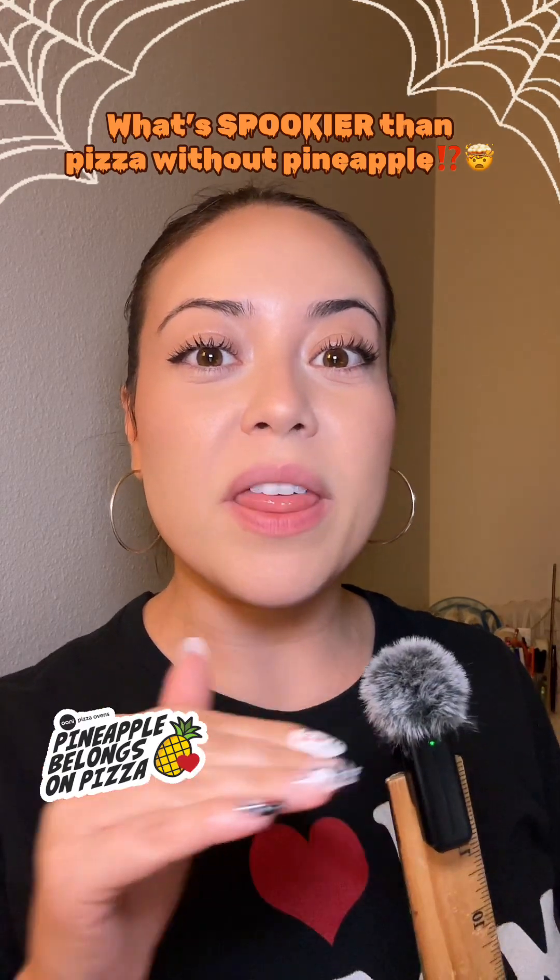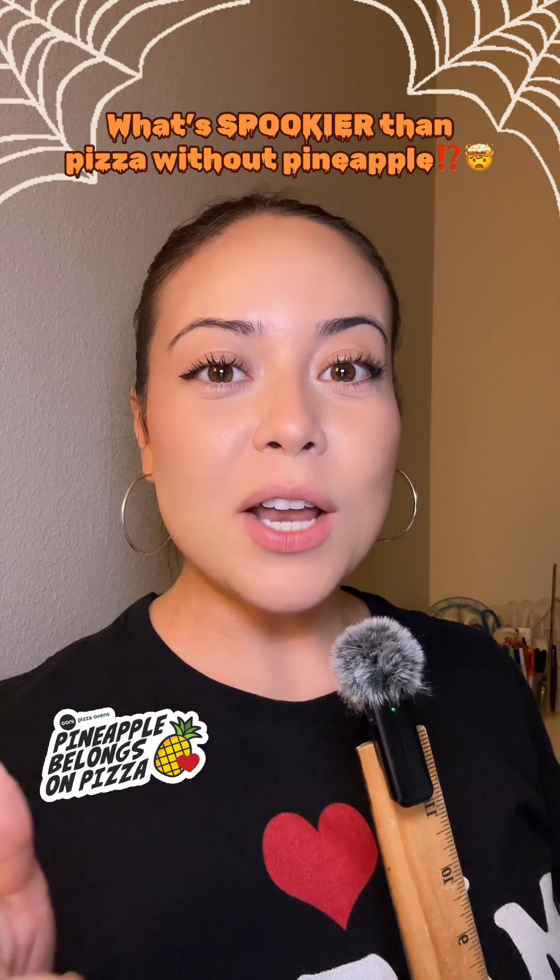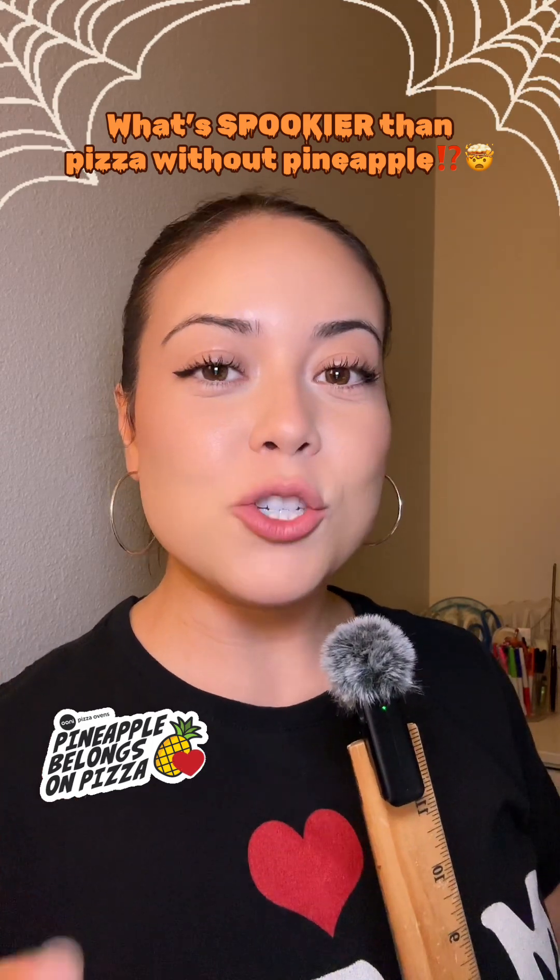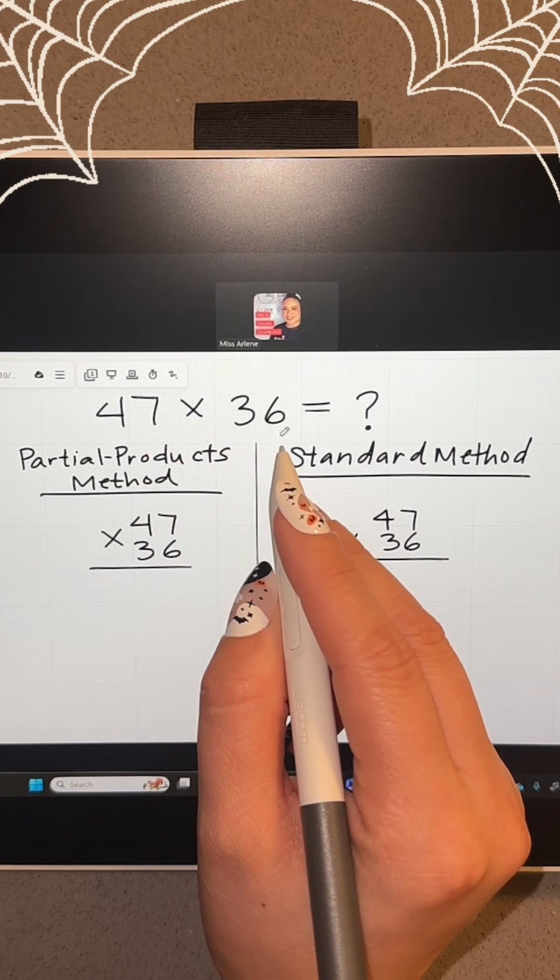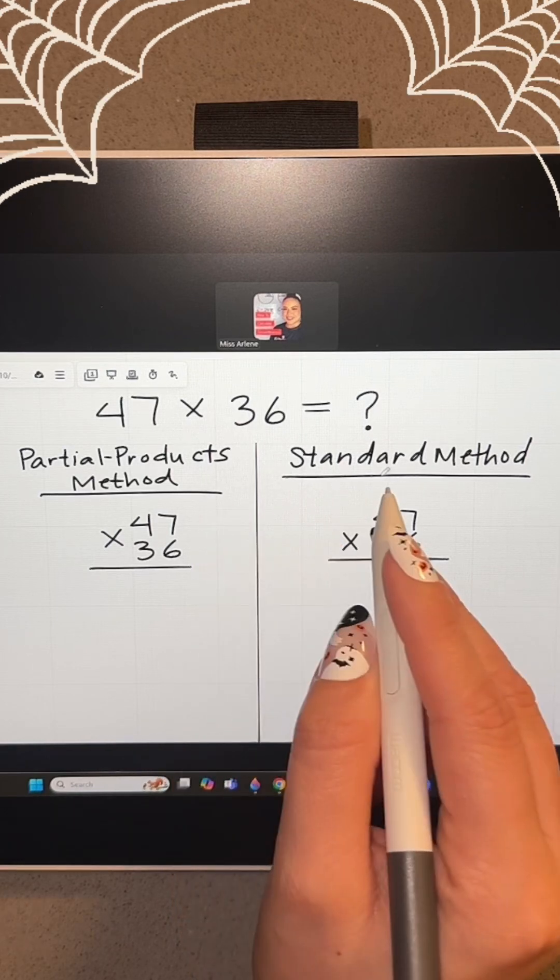You know what's spookier than eating pizza without pineapple? Not knowing how to multiply. And today I'm going to show you two methods using my new Wacom 112. We're going to multiply 47 and 36 using the partial products method and the standard method.